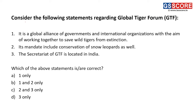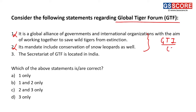Consider the following statements regarding the Global Tiger Forum. First statement: it is a global alliance of governments and international organizations with the aim of working together to save wild tigers from extinction. This is incorrect — it describes the Global Tiger Initiative, not GTF. Second statement: its mandate includes conservation of snow leopards as well. Again, this is related to GTI, not GTF. Third statement: the secretariat of GTF is located in India, in New Delhi. This is correct. The answer is D — statement 3 only.